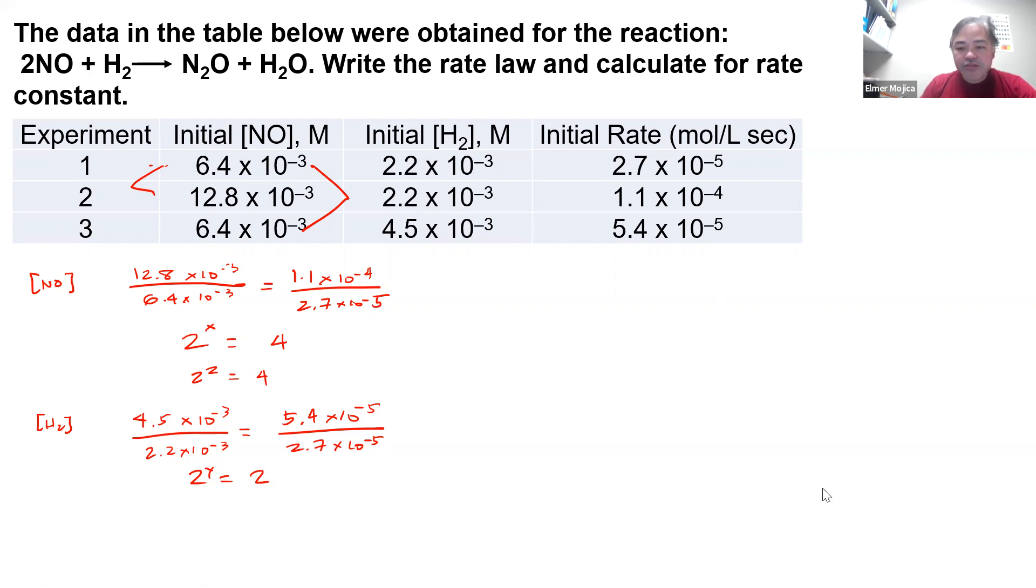Based on this one, the value of y for the statement to become true is 1. So I can now put here, rate is equals to k times NO squared times H₂. The 2 that you have here as the coefficient, that's just a coincidence, that's not the reason why it is squared. Now the next thing that we're going to do is get the rate constant k.